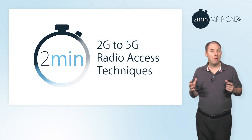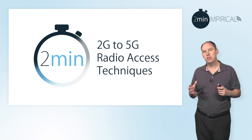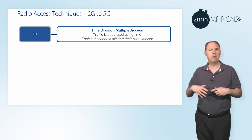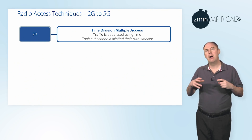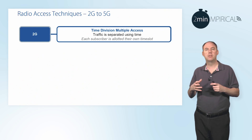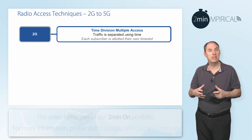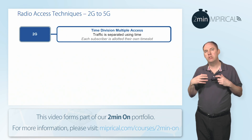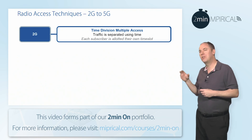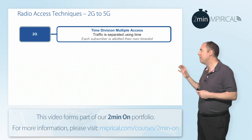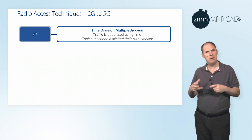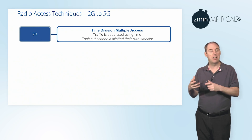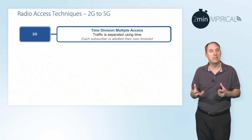When looking at radio access techniques used in modern telecommunication systems, you start looking at different terminology. With the introduction of 2G, we started deciding what technology or technique should we use to access the system. The decision was made to use something called TDMA — Time Division Multiple Access — which effectively means that at different points in time, you give the resource to potentially different users.